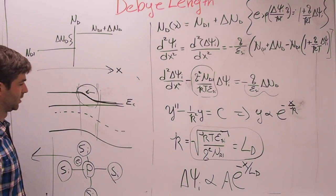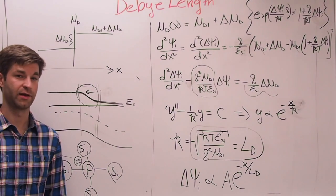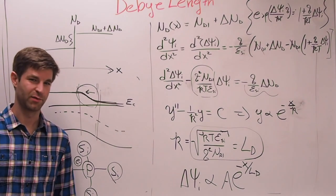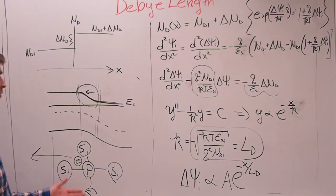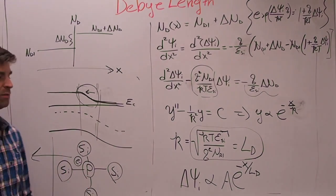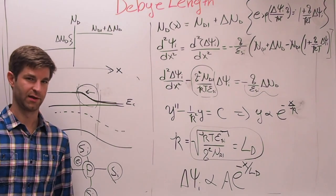So that's pretty much all we're going to talk about Debye length. Next lecture, we're finally going to get into PN junctions, probably something we should have gotten into a while ago. But I hope this was useful. We'll see more of this when we get into MOS devices and CV curves. That's it for today. Thank you.